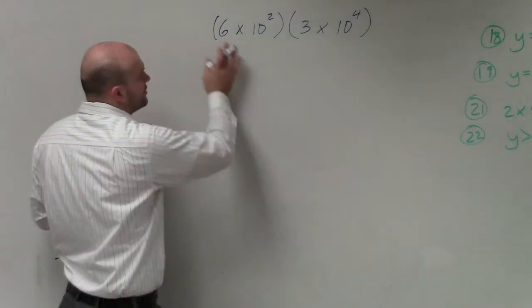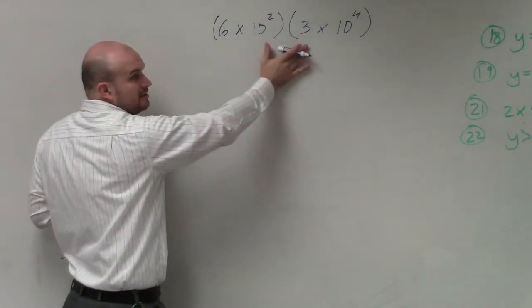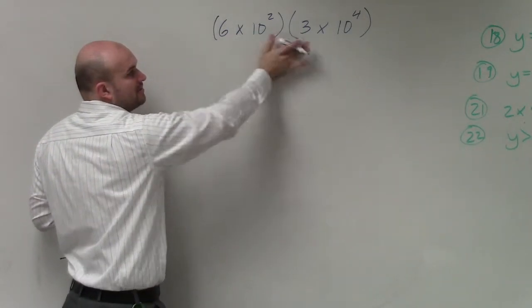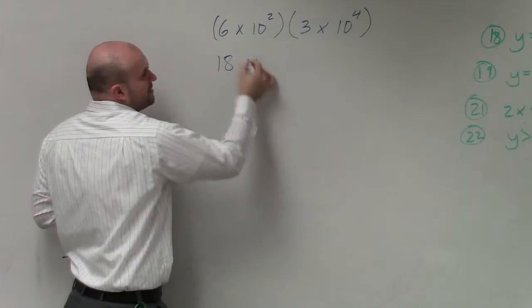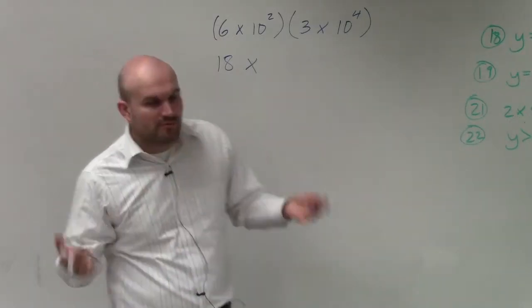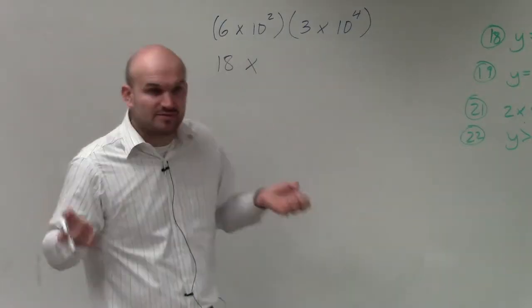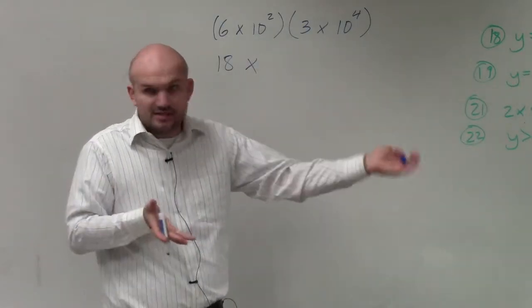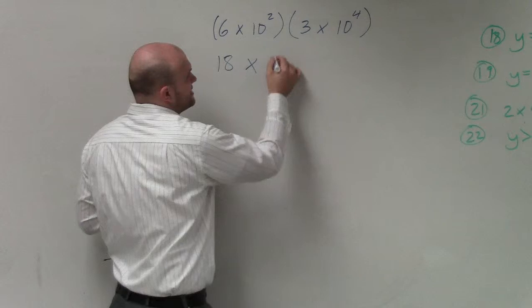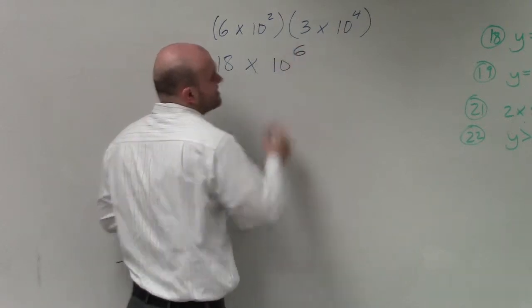All we're going to do is multiply our numbers in front, which would be 6 times 3, which is 18, times, and then when we're multiplying these 10 to the base, we're just going to do it like our power of exponents, which I started the class with. So that's going to be 10 to the sixth power.